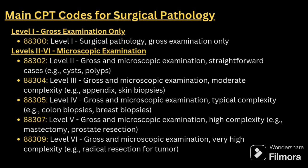Under surgical pathology, we have level 1, level 2, level 3, level 4, level 5, and level 6. Level 1 is gross examination only — that is viewing with the naked eye — and levels 2 through 6 involve microscopic examination.